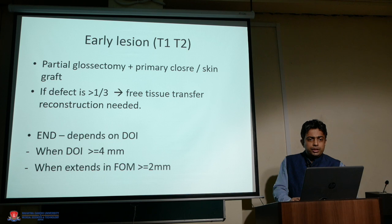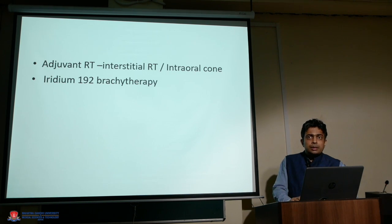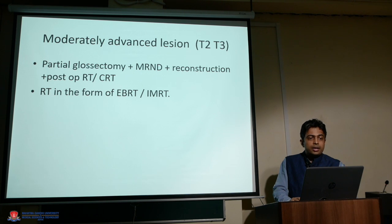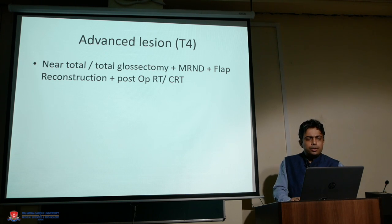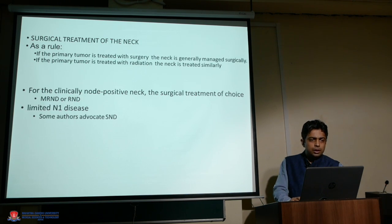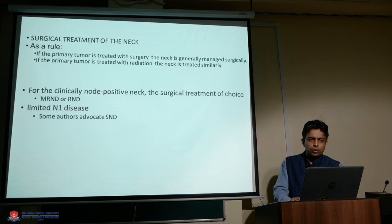Management of early T1–T2 lesions involves partial glossectomy with primary closure or reconstruction and neck dissection. Superficial lesions can sometimes be treated with radiation alone via interstitial RT or an intraoral cone. Moderately advanced T2–T3 lesions require partial glossectomy with neck dissection, reconstruction, and adjuvant radiation or chemotherapy based on histopathology. Very advanced lesions may require near-total or total glossectomy with bilateral neck dissection, flap reconstruction, and adjuvant treatment. For neck management, if the primary is treated surgically, the neck is generally treated surgically as well.